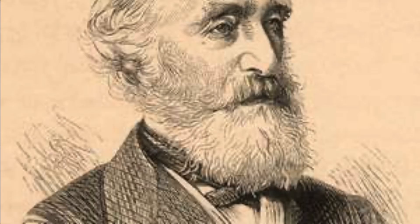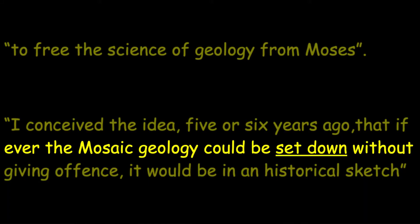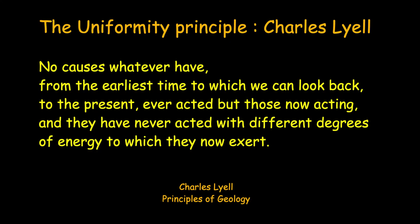We saw in earlier episodes how Charles Lyell conspired with his friend George Scrope to set down what he called mosaic geology, meaning the Genesis flood. After publication, he wrote to Charles Darwin gloating that he had destroyed the book of Genesis without mentioning the Bible. The way he attacked the Bible was to claim that his uniformity principle was the only true basis for geology — that no processes have happened in the past except what we see happening today.